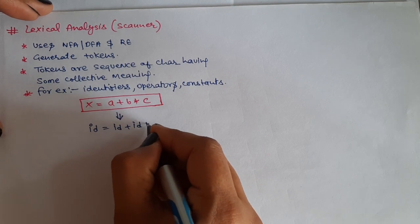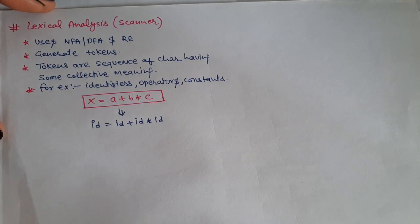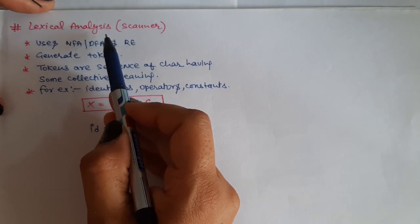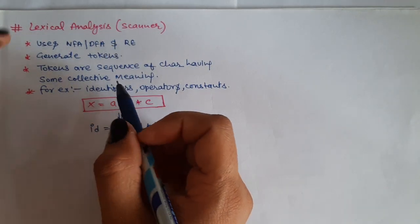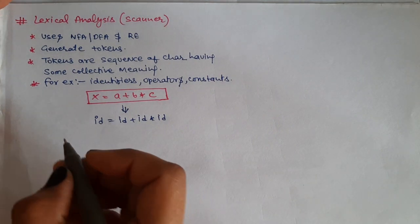In this example, the tokens are like id, equals to, plus, and star. And how do we convert these tokens? We will see in detail when we discuss the lexical analysis phase. Now this sequence of tokens is passed.